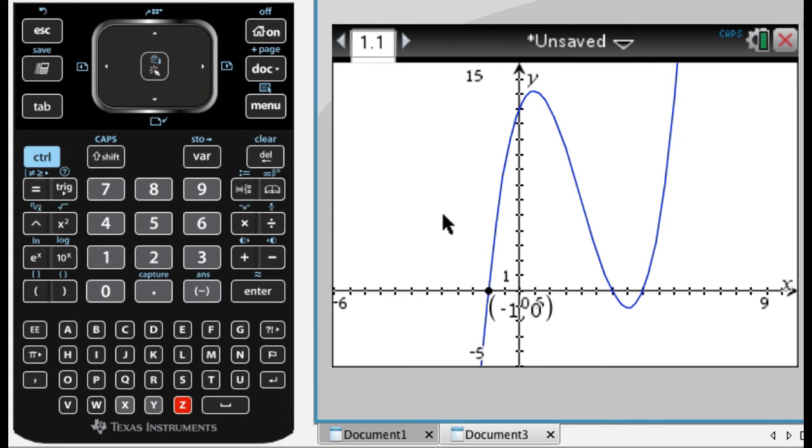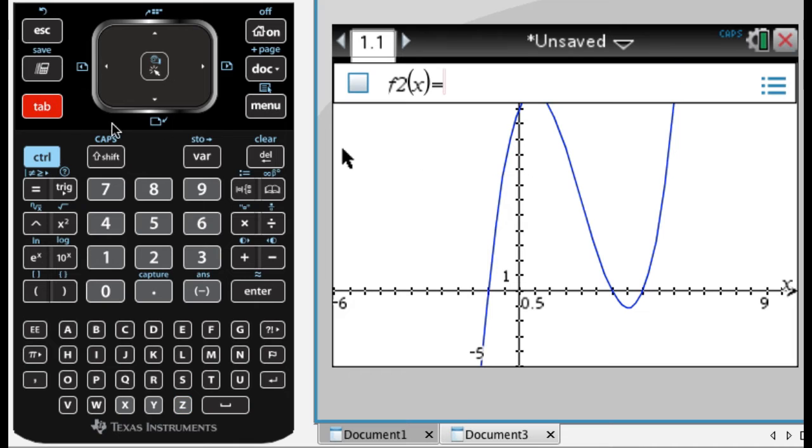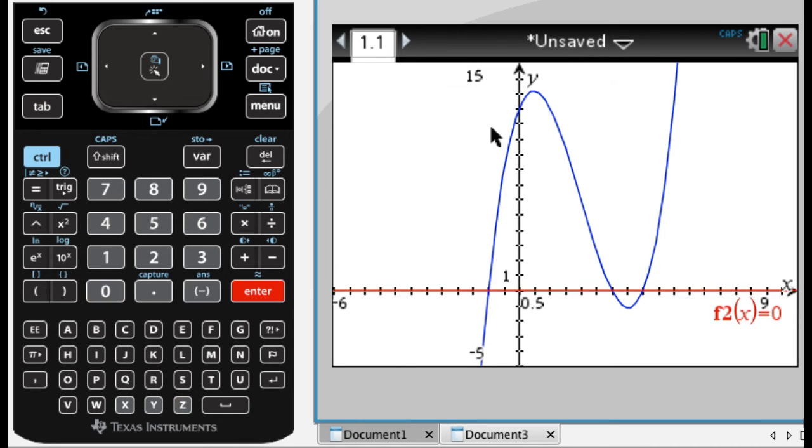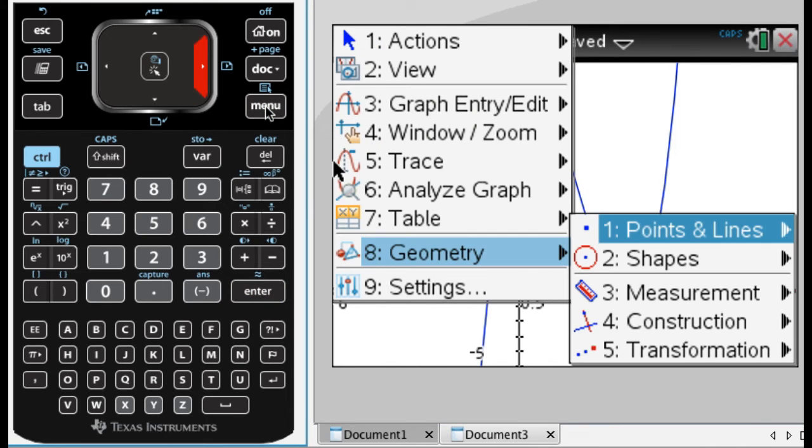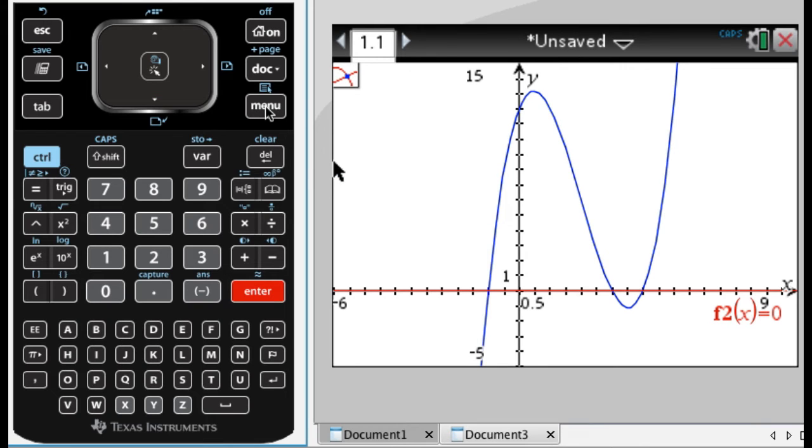So this is actually not the way that I do it. What I do, let me undo that, is I'm going to press tab to get this bar back, and I just grab zero, which is the equation of the x-axis. And now what I'll do is menu, option eight for geometry, who would think, and then option one for points and lines, and then option three, so menu 813.